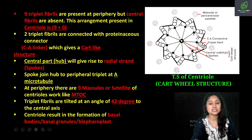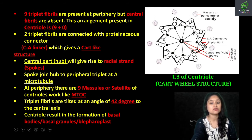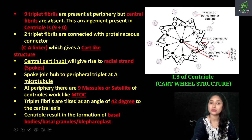The central part, yani ki ye jo hub hai, it gives rise to nine proteinaceous radial strands which are known as spokes. Aur ye jo spokes hain, ye connect karta hai central hub ko peripheral triplet fibril se at A. Also, periphery mein aapko misules, also known as pericentriolar satellites, present hain. Yani ki jo nai centriole ka formation hoga, it is going to occur from misules.